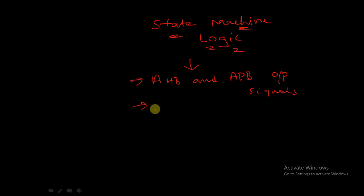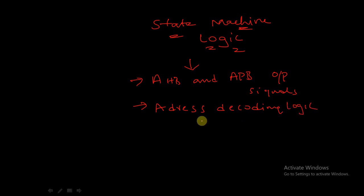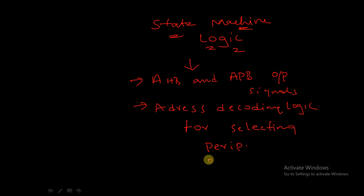The state machine is also used to control address decoding logic, which is used to select peripherals. So the AHB to APB bridge comprises a state machine which controls the generation of APB and AHB output signals and address decoding logic, which is used to generate the APB peripheral select lines.